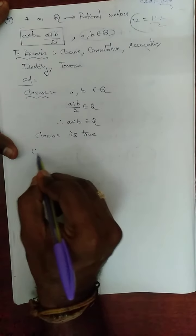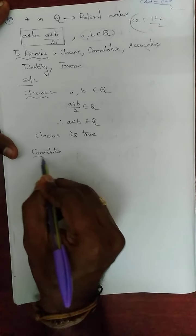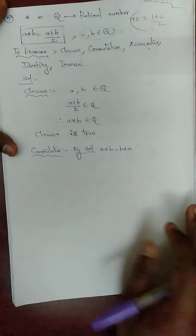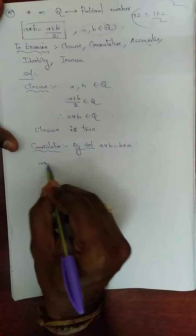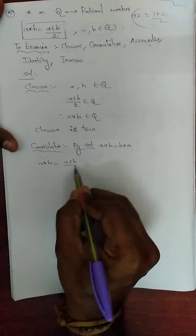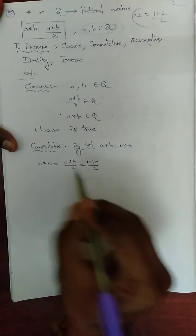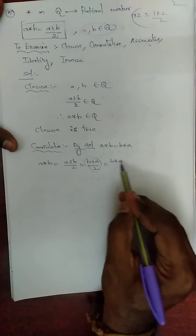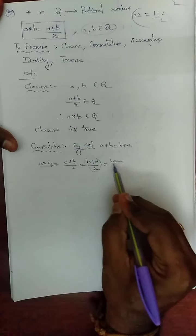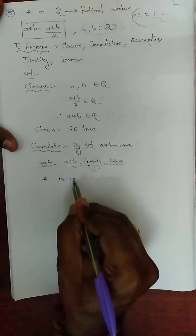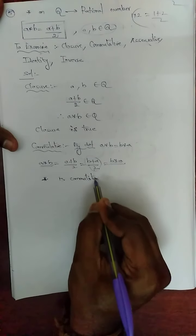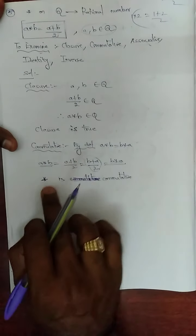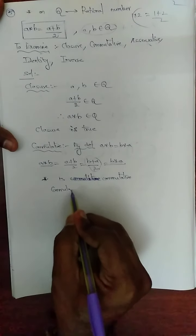Next, commutative. By definition, a★b = b★a. Take a★b — by our formula, a★b = (a+b)/2. Now (a+b) can be written as (b+a), so a★b = (b+a)/2 = b★a. Therefore star is commutative — commutative is true.